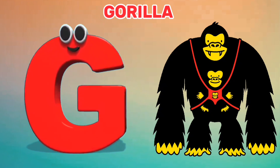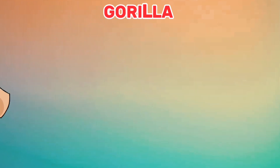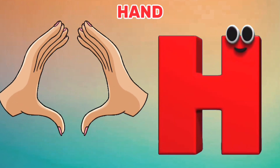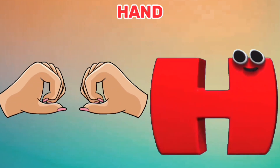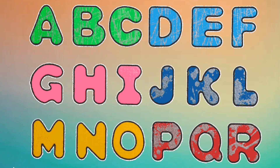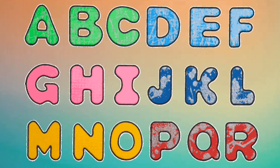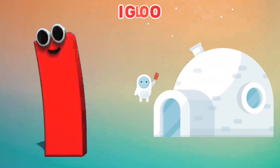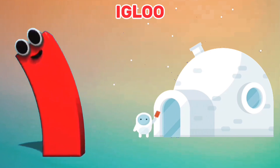G is for Gorilla. G, G. Gorilla. H is for Hand. H, H. H. It's the letters of the alphabet — sing it!